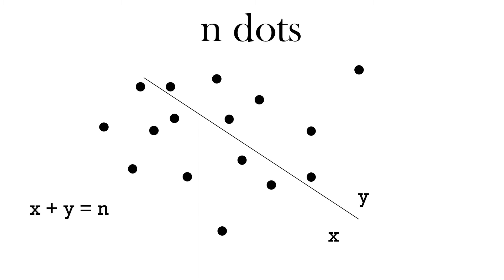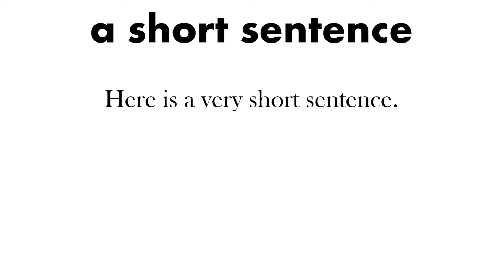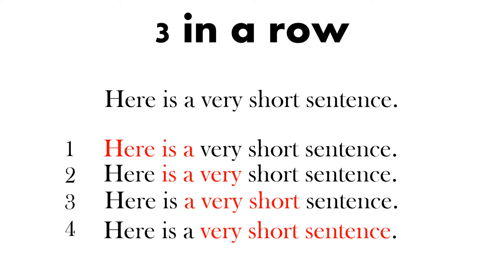Putting those two ideas together, we have n-grams: one gram, two gram, three gram, four gram, and so on. Now let's look at text and specifically words. Here's a short sentence: 'Here is a very short sentence.' We can look at trigrams — three consecutive words in this sentence. There are four trigrams: 'here is a', 'is a very', 'a very short', and 'very short sentence'.